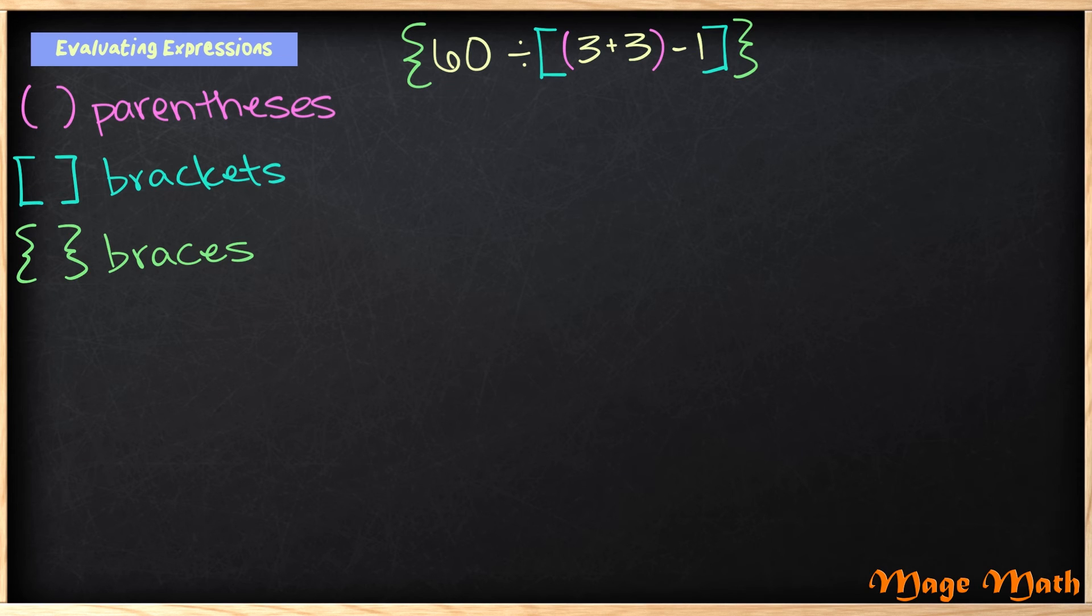Did you start first with our parentheses? You should have added 3 plus 3, which we know is 6. Then we bring everything else down and I have some brackets left. Then I have our 60 divided by and our braces. Next, I'm going to do my brackets. So inside the brackets, I have 6 minus 1. I know that's easy. That's 5.